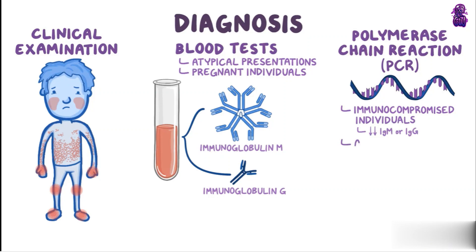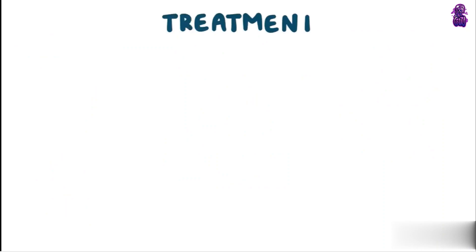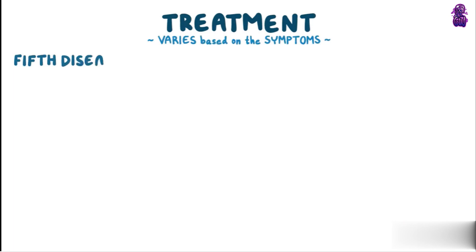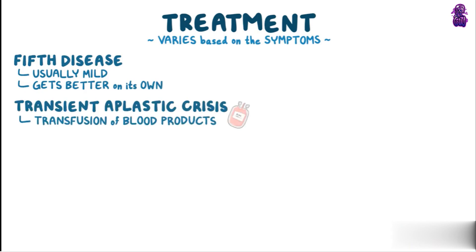PCR can also be used on amniotic fluid to diagnose infection in a fetus. When it comes to treatment for Parvovirus B19 infection, it varies based on the symptoms. Fifth disease is usually mild and gets better on its own, while a transient aplastic crisis often requires transfusion of blood products.